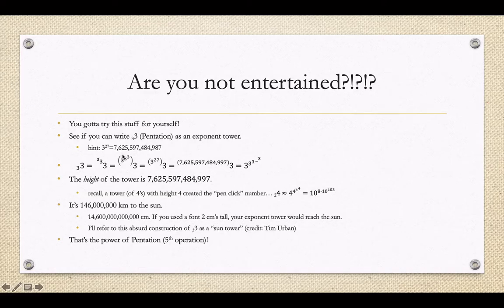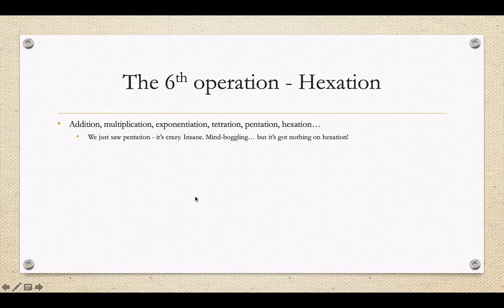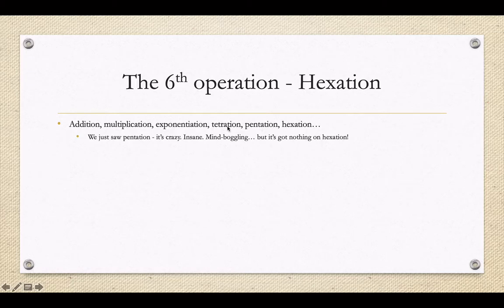The value of a sun tower is way beyond anything we could ever talk about — and that's only our 5th operation. We don't have to stop there. What about our 6th operation? Our 6th operation is called hexation. We got addition, multiplication, exponentiation, then tetration was the first real new one. Then pentation, which is repeated tetration. What we're going to add on now is hexation — repeated pentation. Pentation is insane and mind-boggling, but we're moving right past it to talk about hexation.